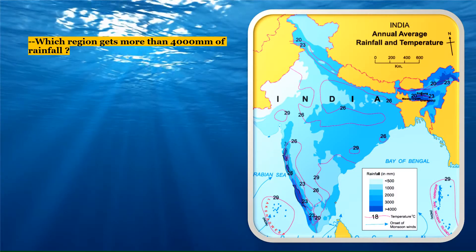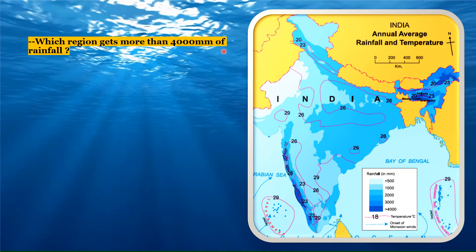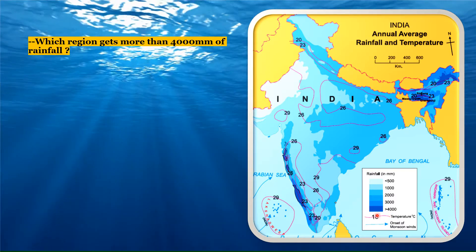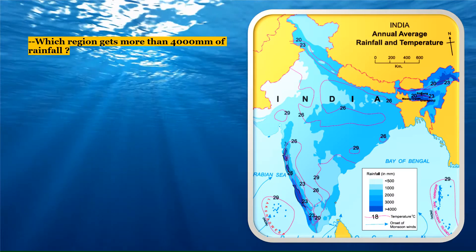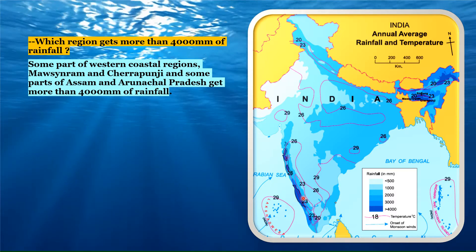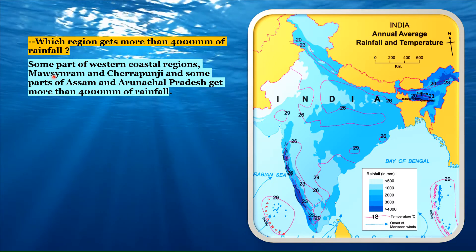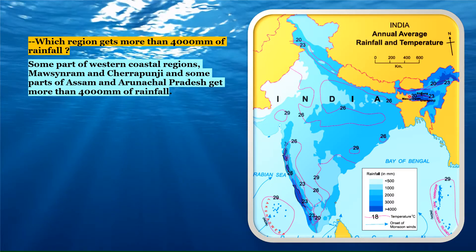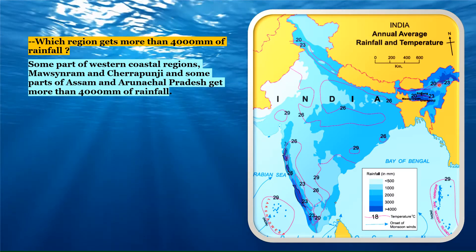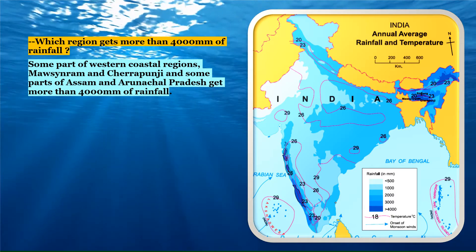We move on to figure 4.3 on page number 26 of our textbook. The first question asks which region gets more than 4000 millimeters of rainfall. Going to the index, regions with more than 4000 millimeters of rainfall are shown in dark blue. Some parts of the western coastal region are marked in dark blue and receive more than 4000 millimeters. Then we have Mawsynram and Cherrapunji, also shown in dark blue. And Arunachal Pradesh and Assam — this area is also shown in dark blue. These are the regions which experience more than 4000 millimeters of rainfall.